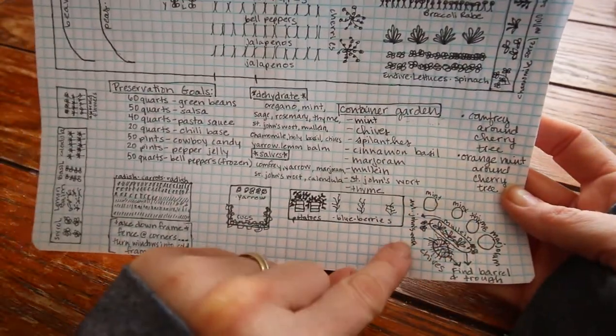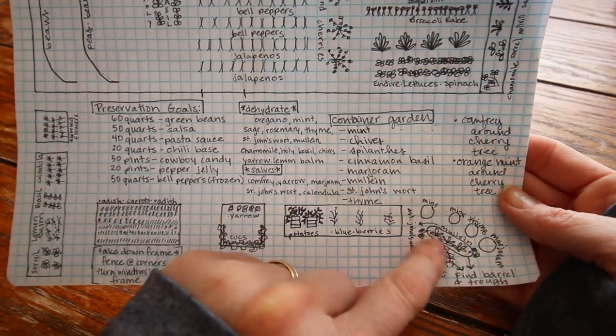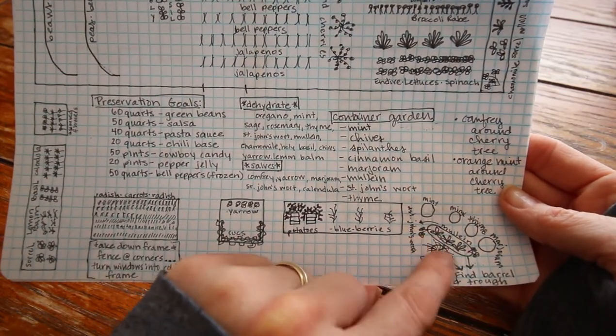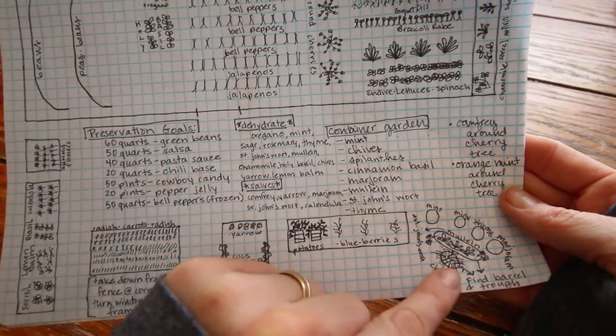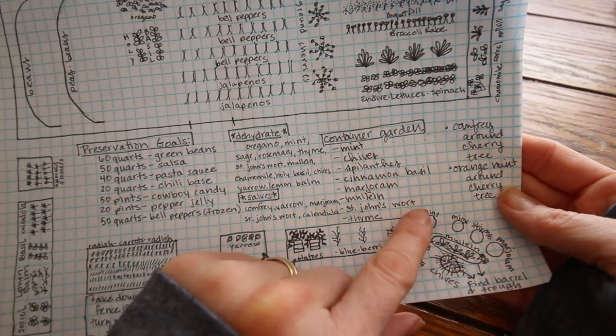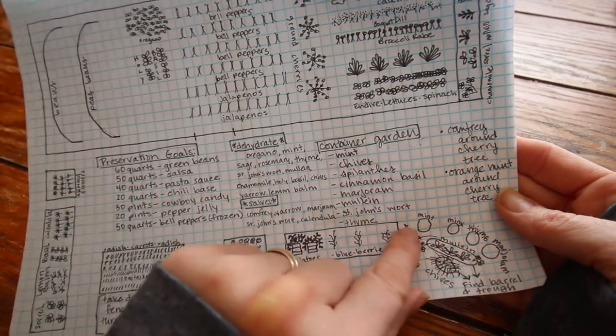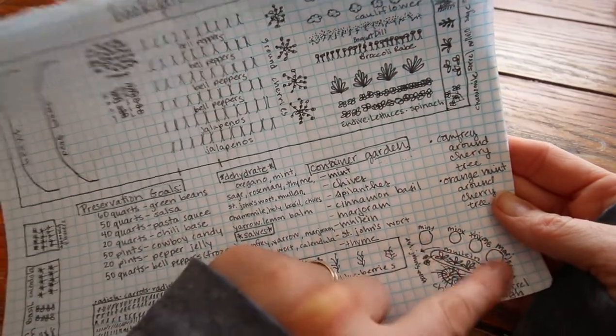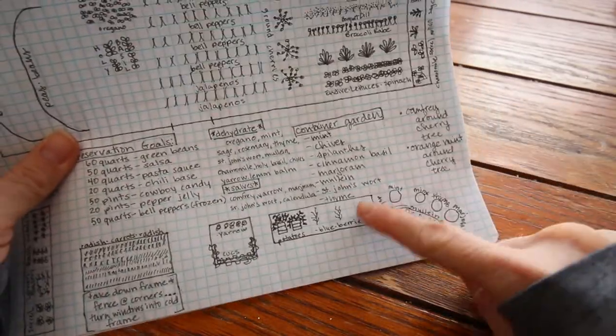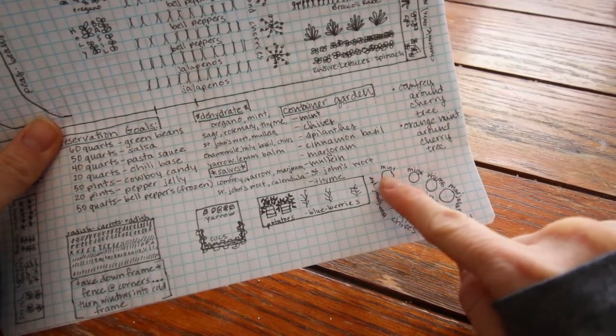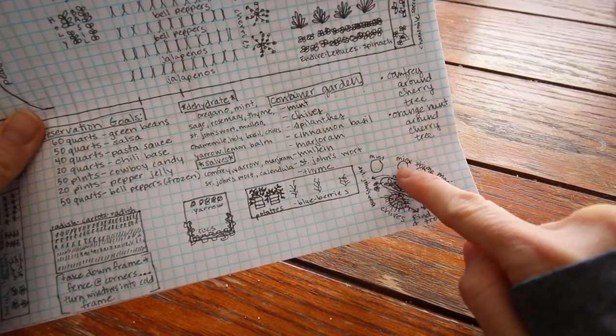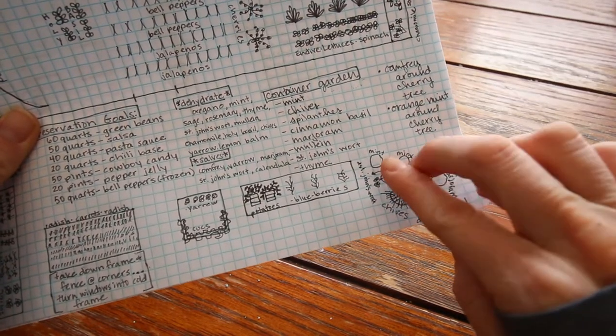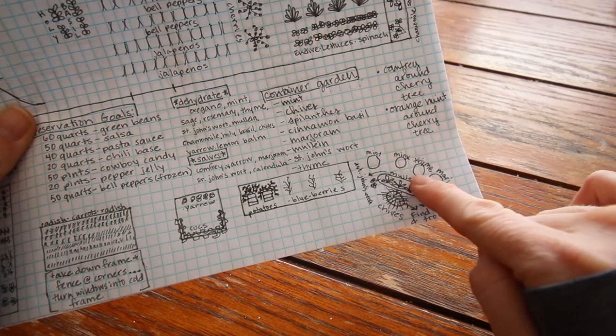This is the container garden area I have here. Mullein in here is gonna be in a trough. I want to get a big barrel and elevate that for the chives. I've got more than four containers. I've got mint that's already in those pots and I overwintered them.